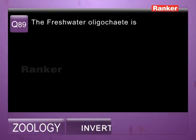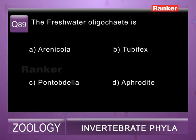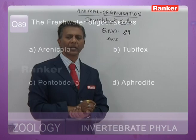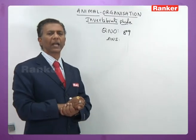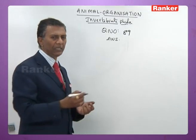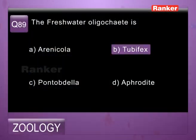Question eighty-nine: the freshwater oligochaete is — a) Arenicola, b) Tubifex, c) Pontobdella, d) Aphrodite. The answer for eighty-ninth question is b) Tubifex.